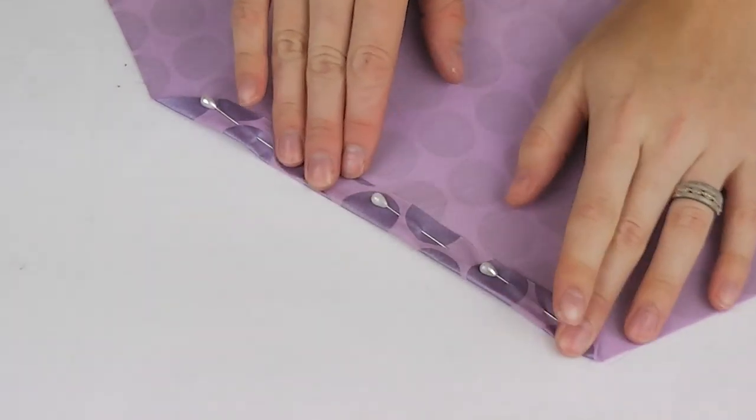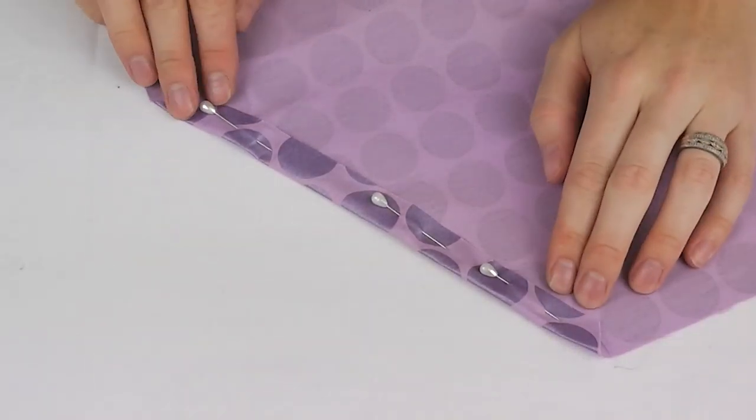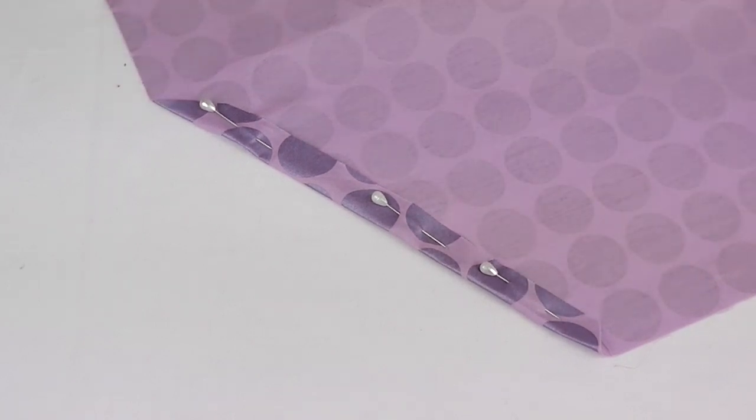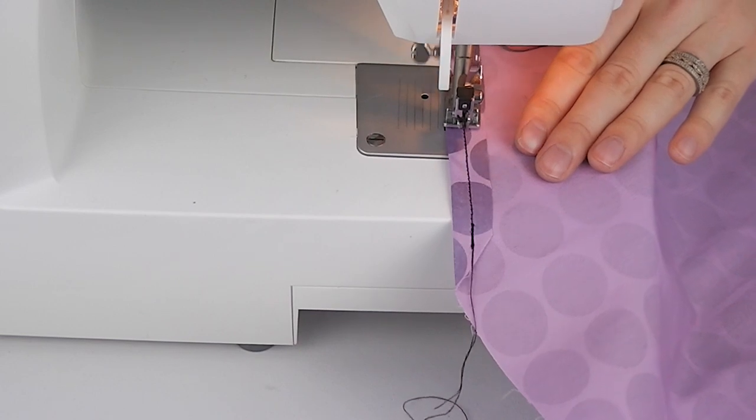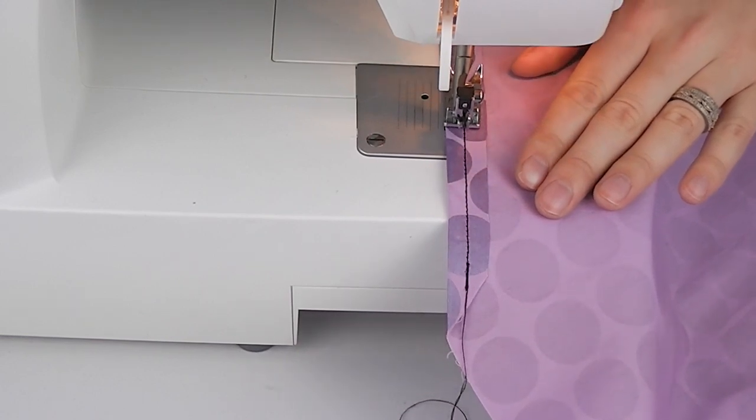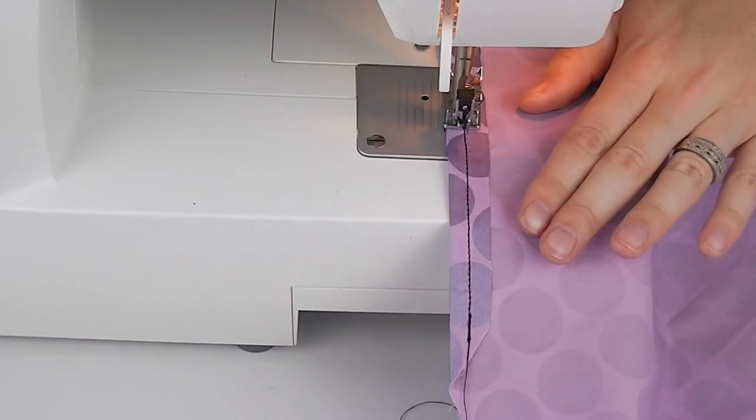Measure a 1cm seam along these cuts, pin and sew. Complete for both front and back pieces. The colour of the thread that you use will be seen on the final product.